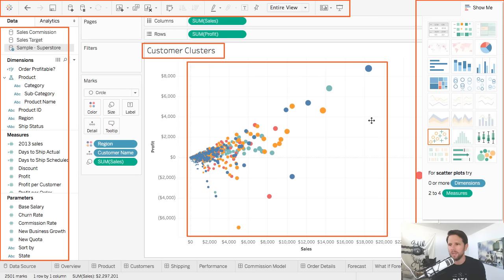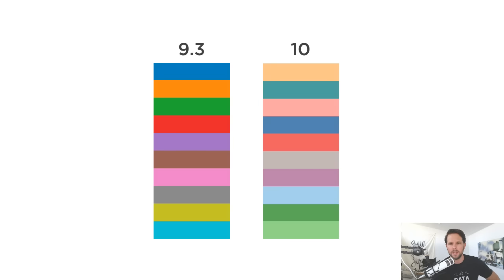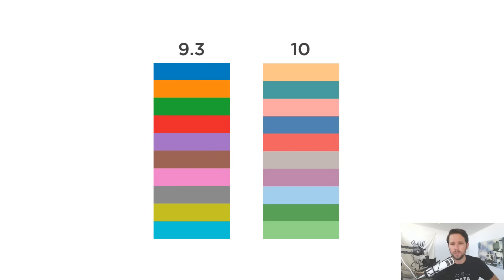The data window shows updated fonts. I really like how subtle the separators are between the panes — dimensions, measures, and parameters. The colors being used here in the default color palette just work. It's not that bright Crayola crayon color we're used to seeing. I think it will save you time when using color to show divergence between measures or elements. And even Show Me got an update. I made a comment to Francois during beta testing that it hurts my eyes to go back because this one is so beautiful. Kudos to the team.